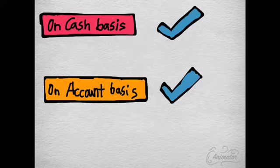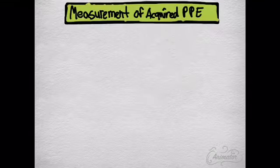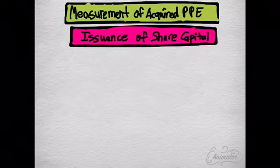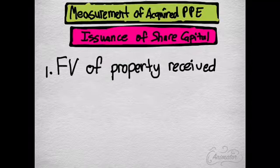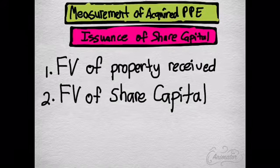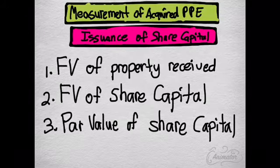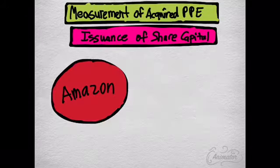Sometimes a company may issue share capital in exchange for the property, and it has different priorities. The first one would be fair value of the property received, next is fair value of share capital, and the last one is par value of share capital. You're going to learn that through this example.